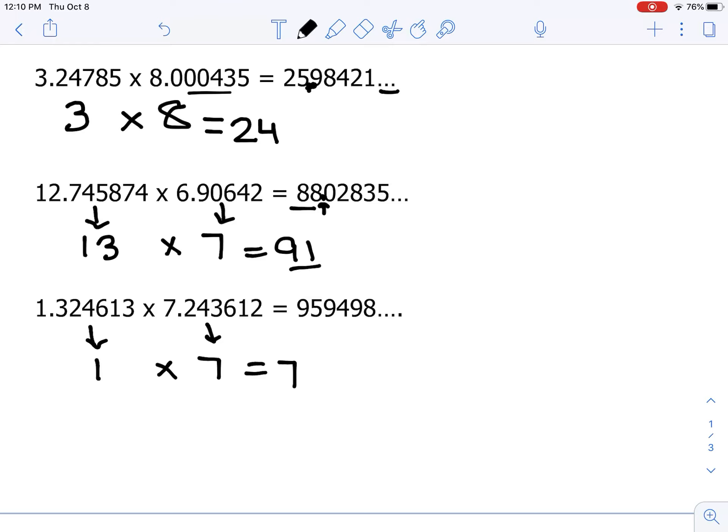So we want our number up top, the product, to be close to 7. So I would have to put the decimal point between the 9 and 5. 9.5 is pretty close to 7 compared to the other options of 0.959498 and so on, or 95.9498. Those are really far away from 7, so those are not appropriate.